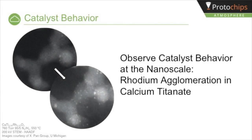In heterogeneous catalysis, viewing changes moment-by-moment under controlled conditions such as reduction and oxidation at high temperature enables scientists to more accurately understand and create more effective materials. In this example, rhodium-doped calcium titanate is exposed to reduction conditions — 95/5% nitrogen-hydrogen at 550 degrees Celsius. Under these conditions, the rhodium becomes mobile and agglomerates into large nanoparticles and nanoclusters. How large these particles and clusters become, how they interact with the calcium titanate substrate, and where they form are all important factors which are visualized and tracked in real time.